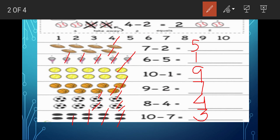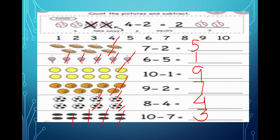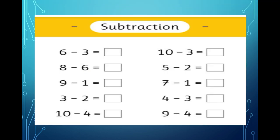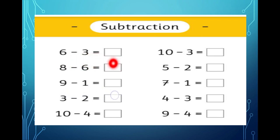We have done so many questions of this type from your book. Now something I have taken from outside the book so that you may enjoy it. Let us do some more questions — this is also subtraction. What kind of subtraction is this, children? It is called horizontal. Do you remember — when we write things in a straight line it is called horizontal. So these are horizontal method of subtraction.